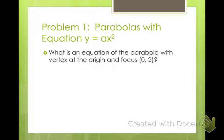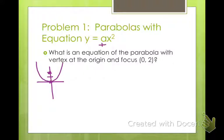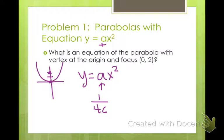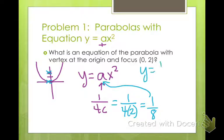What is the equation of a parabola with vertex at the origin and a focus of (0, 2)? We know the vertex is at (0, 0) and the focus at (0, 2) is inside the parabola, so it opens upward. Our equation is y = ax². To find a, we use 1 over 4c. The distance from vertex to focus is 2 units, so a = 1 over 4 times 2 = 1/8. The equation is y = (1/8)x².